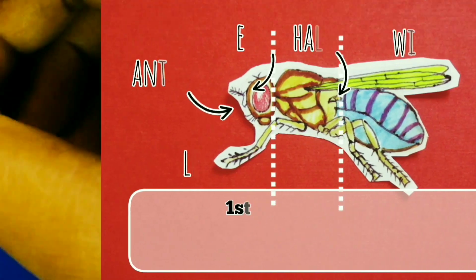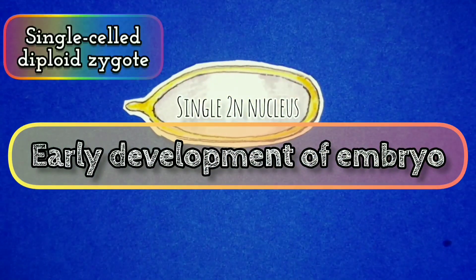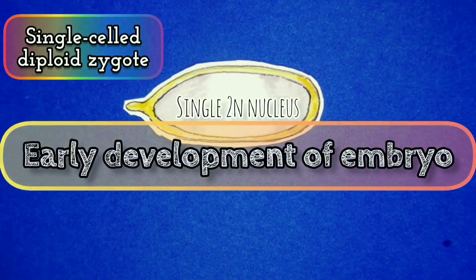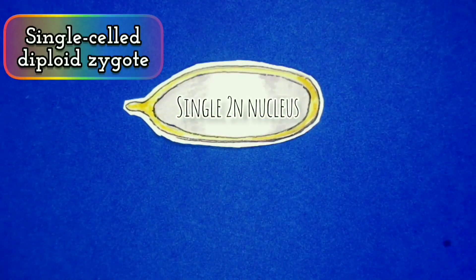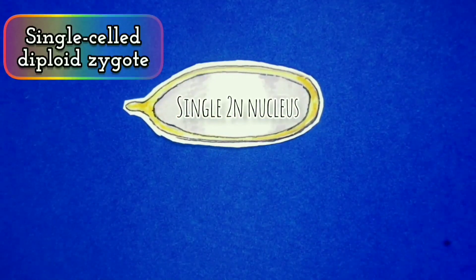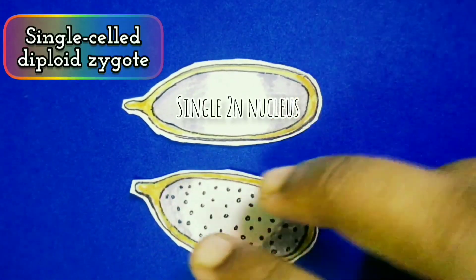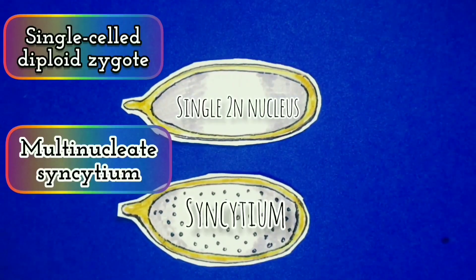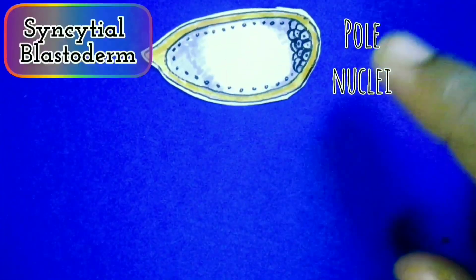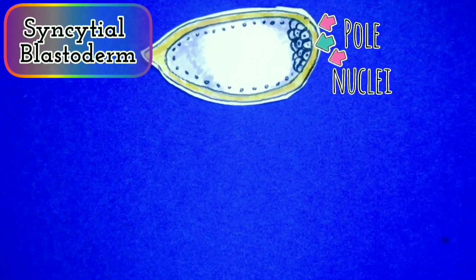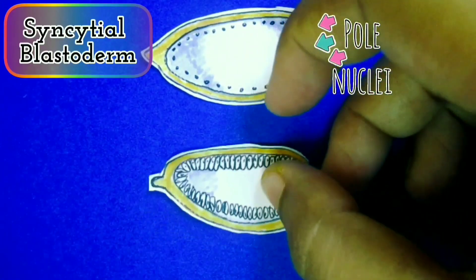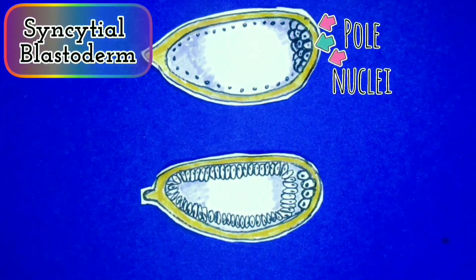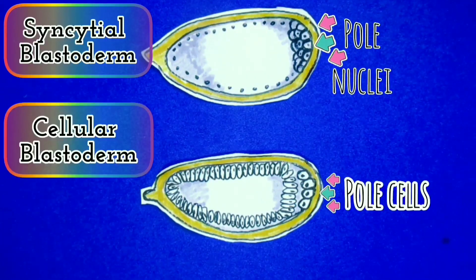Sperm and egg nuclei fuse to create a single diploid zygote. Its diploid nucleus immediately divides nine times without any division of the cytoplasm, consequently creating a single multi-nucleate cell known as a syncytium. These nuclei are scattered throughout the cytoplasm; later they migrate toward the periphery of the embryo and divide several more times, creating the syncytial blastoderm.